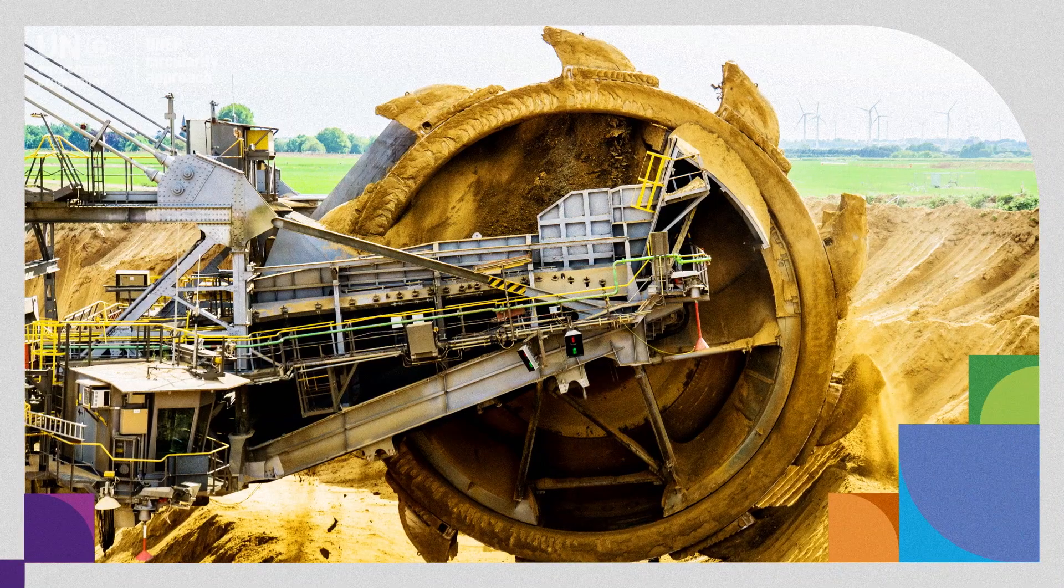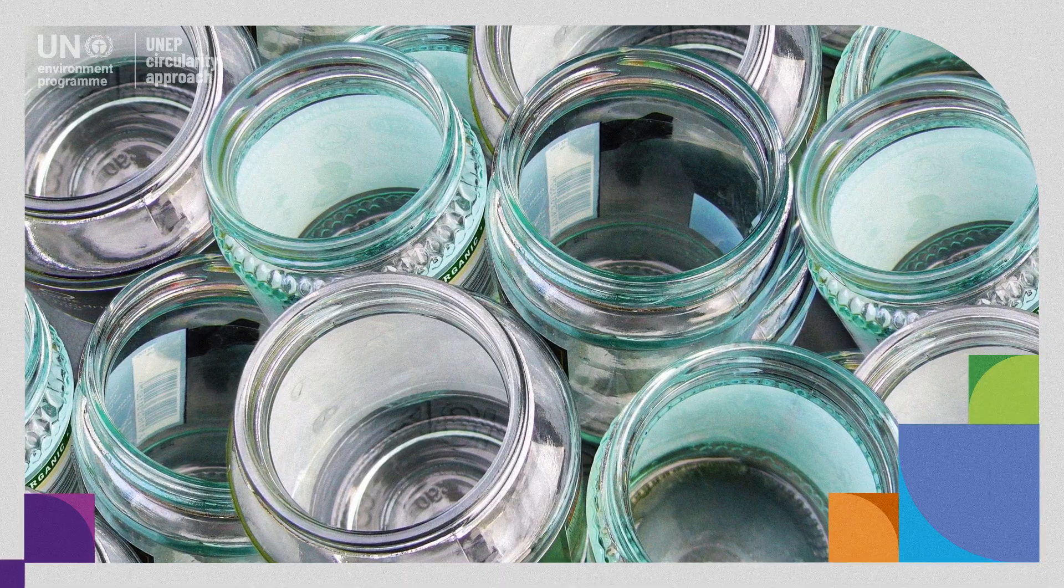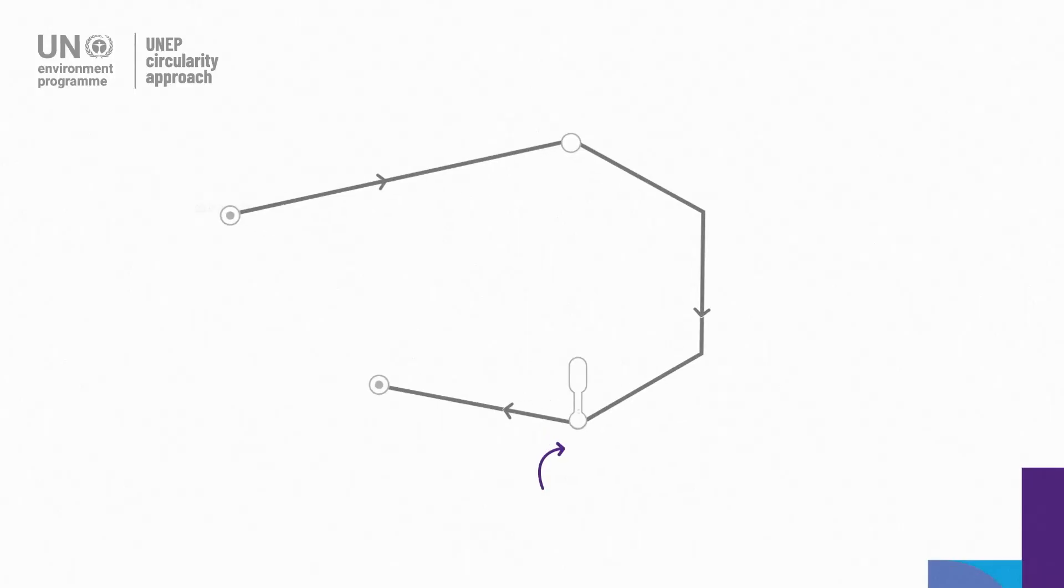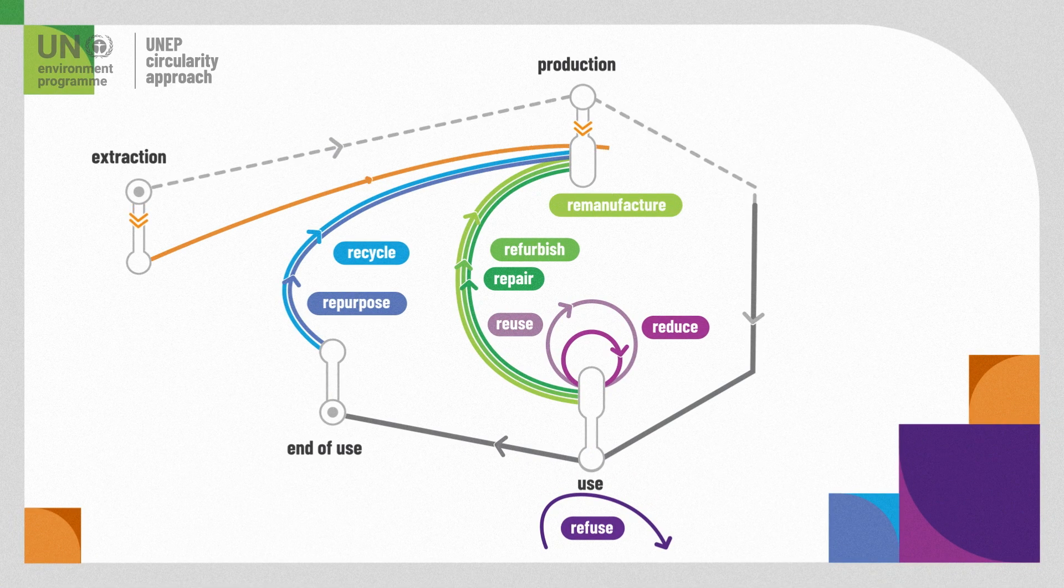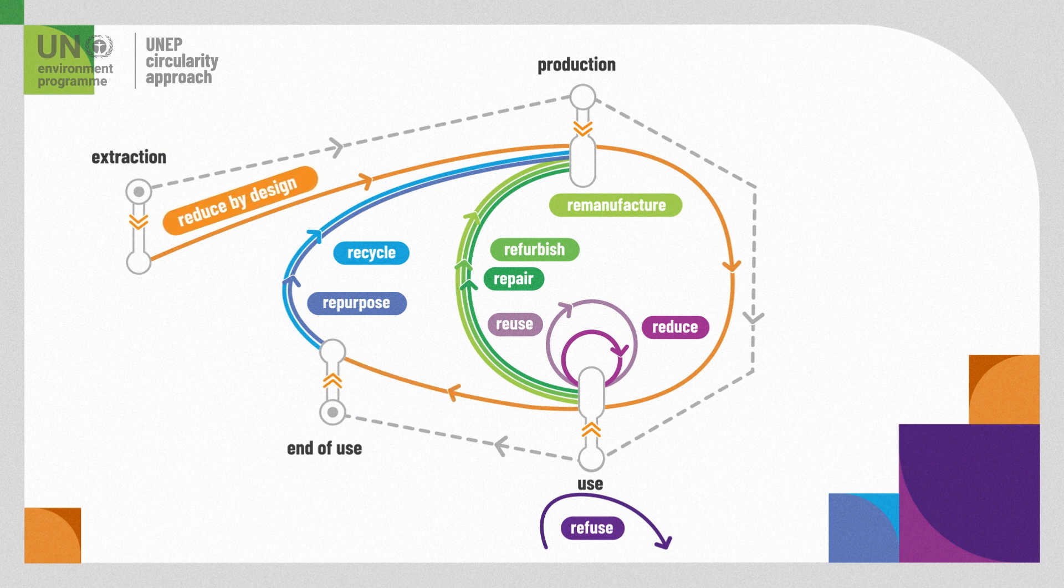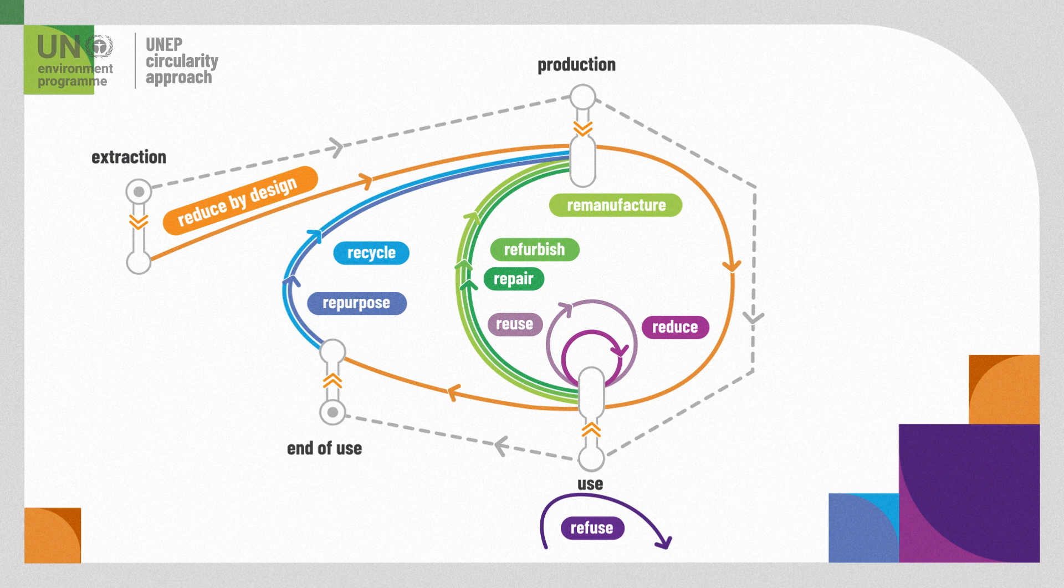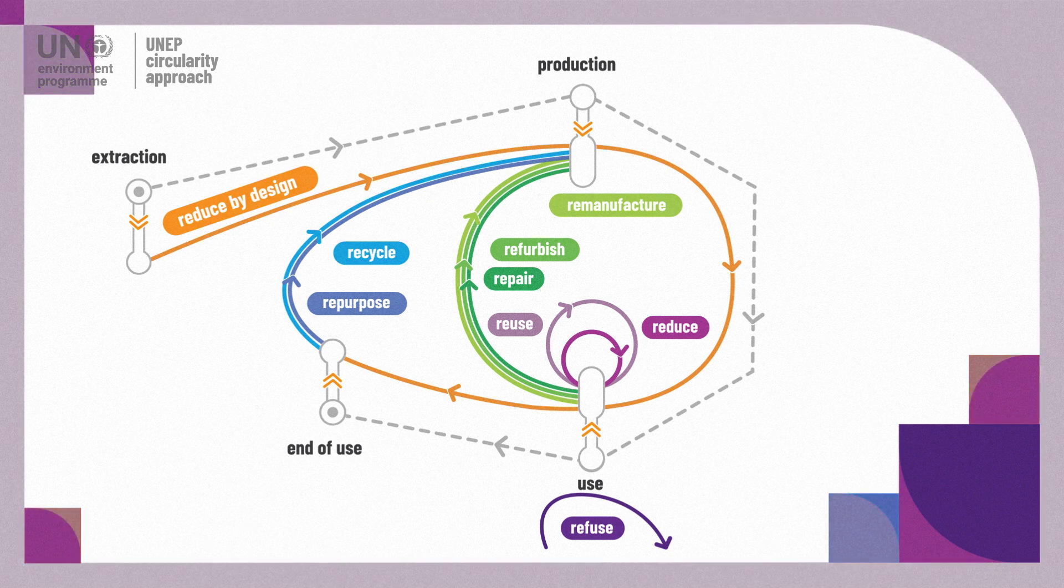Circularity keeps materials at their highest possible value throughout the value chain. Circularity builds upon eight value retention loops and one guiding principle of reduce by design. Let's look at each of these circular processes from the most impactful to the least.